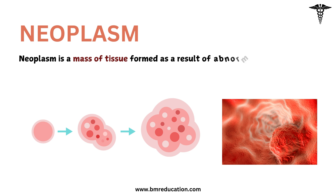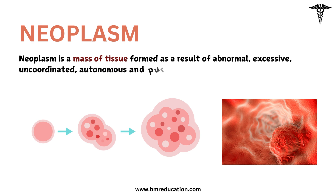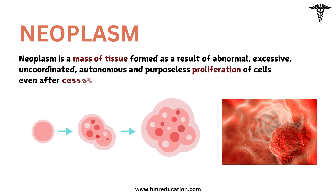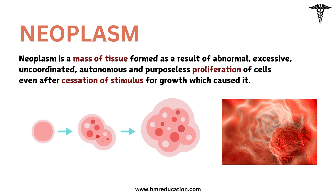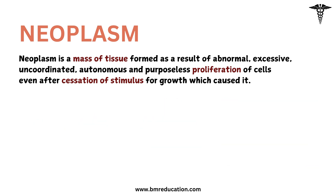A neoplasm is a massive tissue formed as a result of abnormal, excessive, uncoordinated, autonomous, and purposeless proliferation of cells even after cessation of the stimulus for growth which caused it. So, a neoplasm is essentially an uncontrolled, unnecessary, and rebellious growth of cells that doesn't stop even when it should.